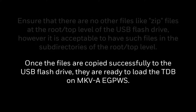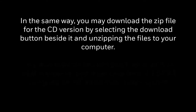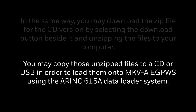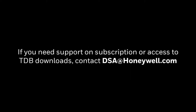Once the files are copied successfully to the USB flash drive, it is ready for loading the TDB on Mark5A EGPWS. In the same way, you may download the zip file for the CD version by selecting the Download button against it, unzip the files to your computer, and copy those unzipped files to a CD or USB to load them onto Mark5A EGPWS using the ARINC 615A data loader system. If you need support on subscription or access to TDB downloads, contact dsa@honeywell.com.